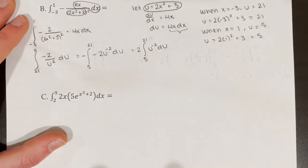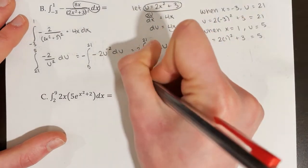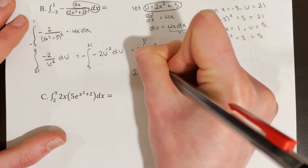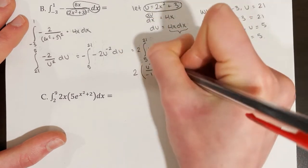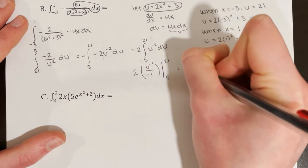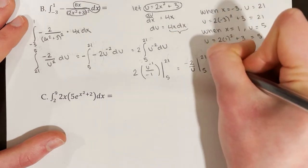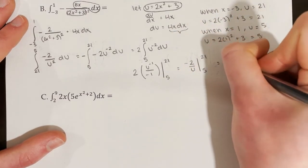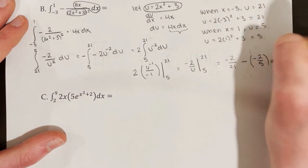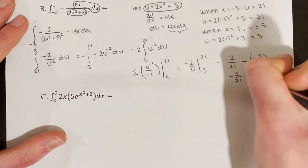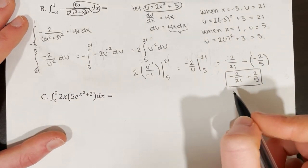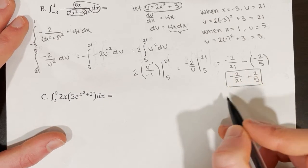Now this just becomes a fundamental theorem of calculus problem to evaluate. The antiderivative of u to the negative 2 is u to the negative 1 over negative 1, evaluated at 5 and 21. This is really negative 2 over u evaluated at 5 and 21. Plugging in 21 gives negative 2 over 21, then subtracting gives minus negative 2 over 5. That's negative 2/21 plus 2/5. If you're on the AP exam with simplified answer choices you'd simplify the fraction; on a free response question it's fine to leave it like this.